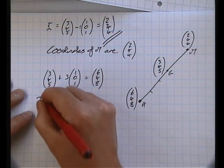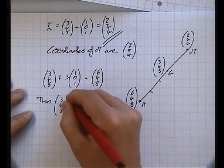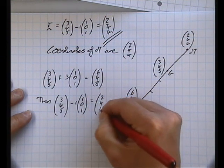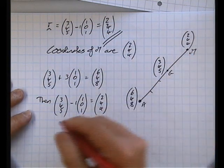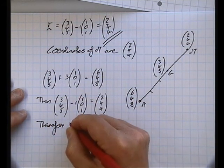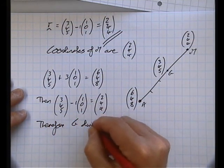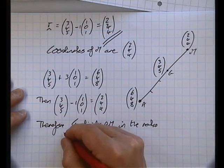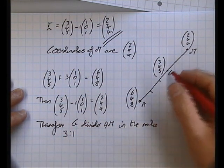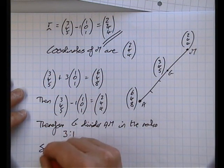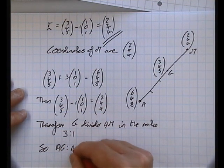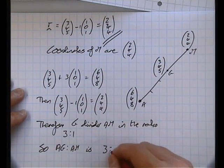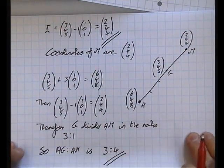Then we can also see that (3, 4, 5) minus 1 lot of (1, 0, 1) is equal to (2, 4, 4). So there's one lot on the far side of that. So this shows, therefore, G divides AM in the ratio 3 to 1. So there are 3 parts between A and G and one part between G and M. And so, in fact, AG to AM is 3 to 4. So right, that's that part 2 done.